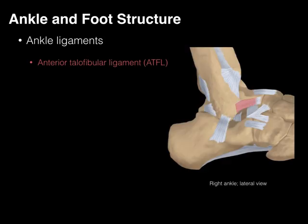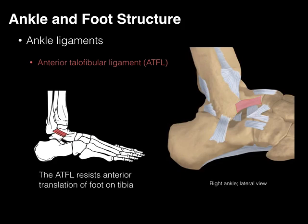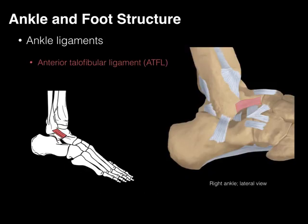First, the anterior talofibular ligament, which receives its name because it attaches to the talus and to the fibula, and it's on the front, abbreviated ATFL. The ATFL is going to limit or resist anterior translation of the foot on the tibia. In addition, when you plantarflex the ankle, the ATFL resists inversion during plantarflexion. The ATFL is also the most commonly sprained of all these ligaments.